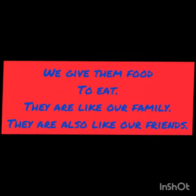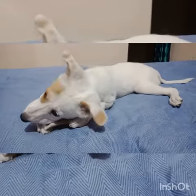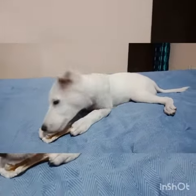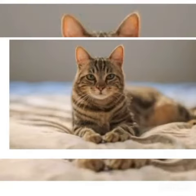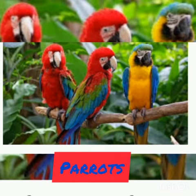Pet animals are the animals which stay with us in our home. We give them food to eat and they are like our family. We also treat them like our friends. A few examples are dog — meet my pet, she is Kiwi. She plays a lot and she is very naughty. Next is cat, it is also a pet animal. And parrots.